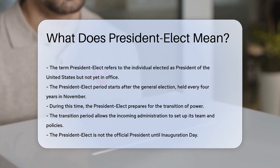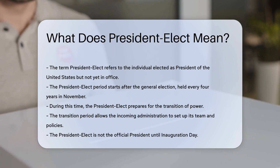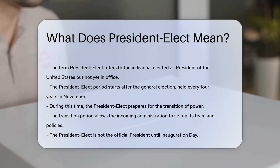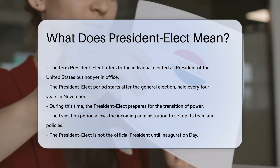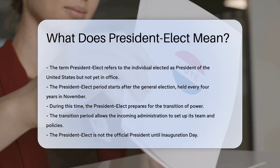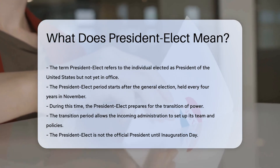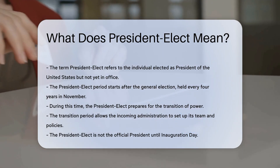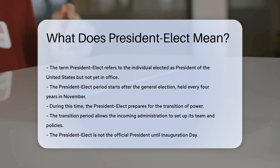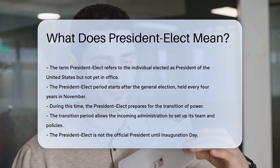This period starts after the general election, held every four years in November. During this time, the President-Elect prepares for the transition of power. The transition period allows the incoming administration to set up its team and policies.